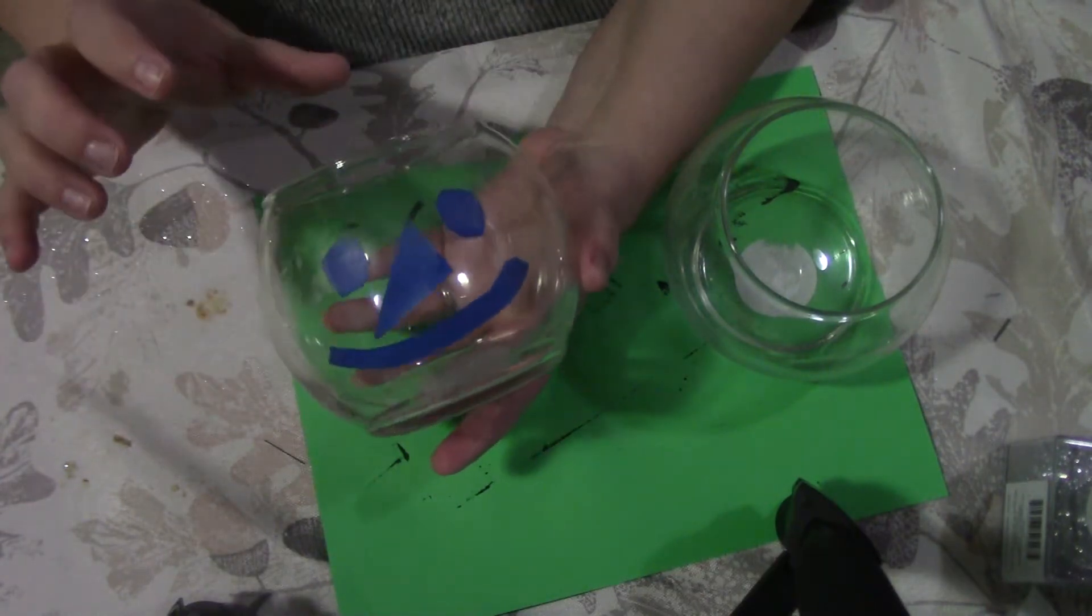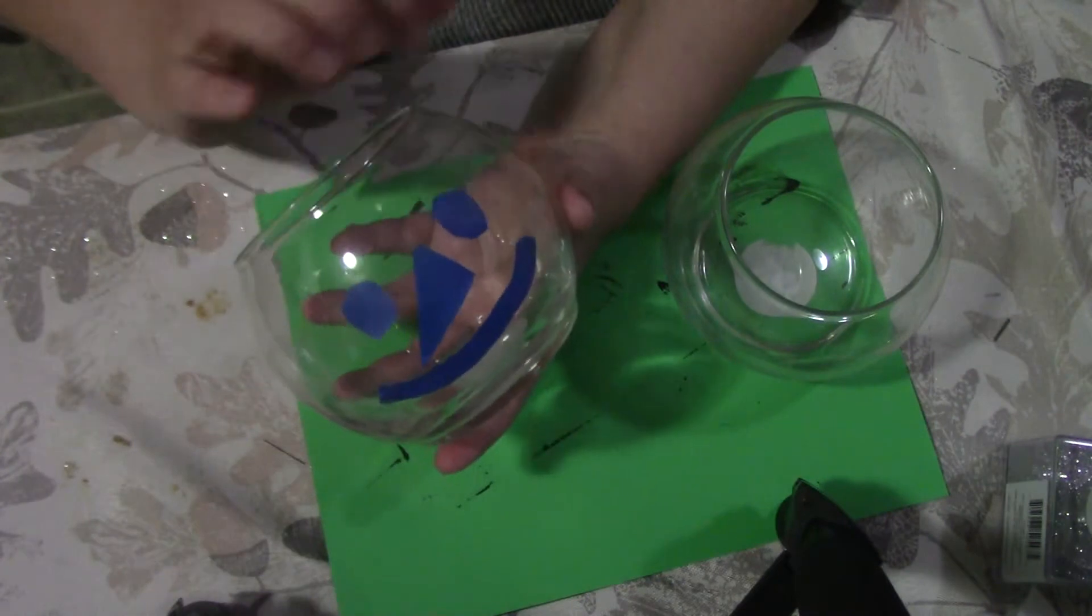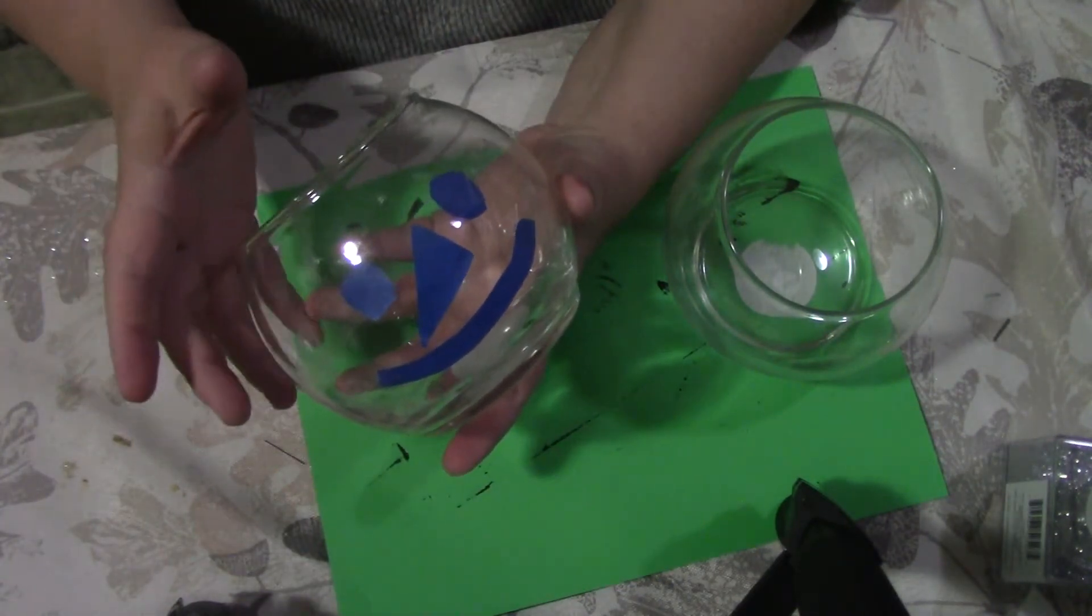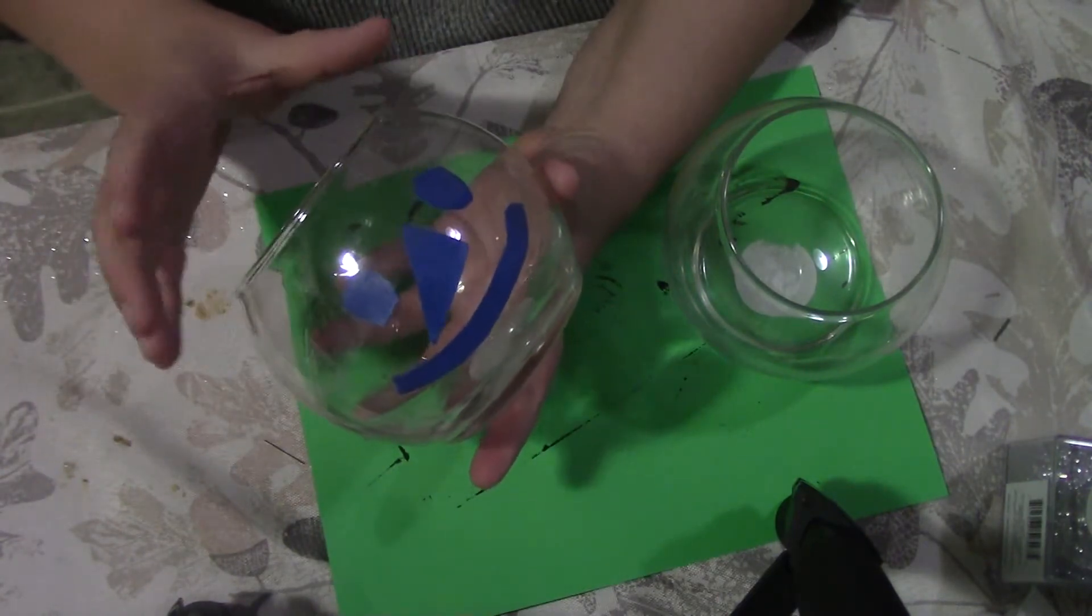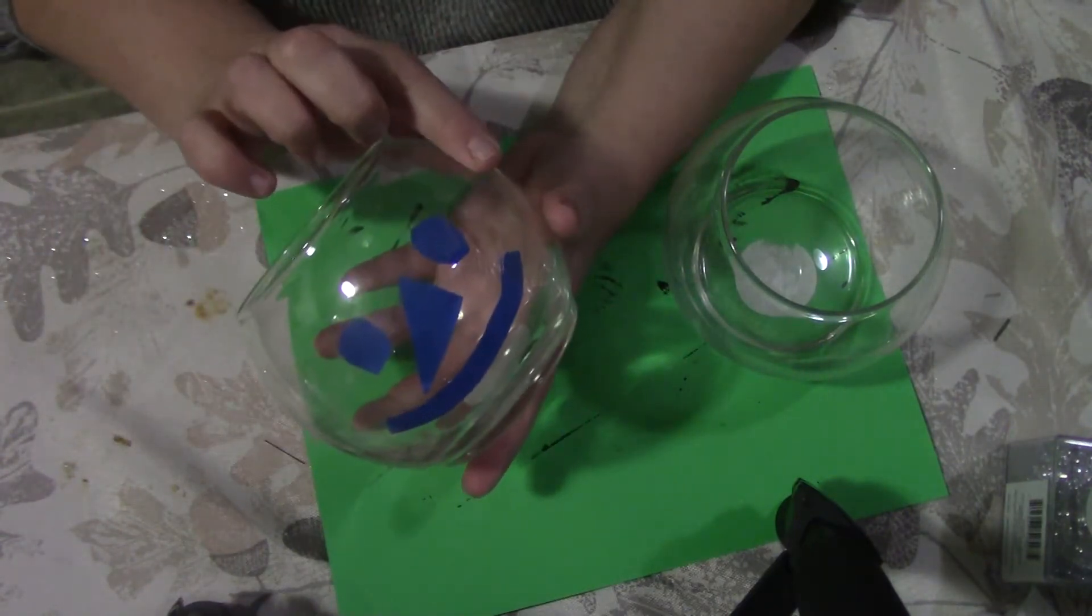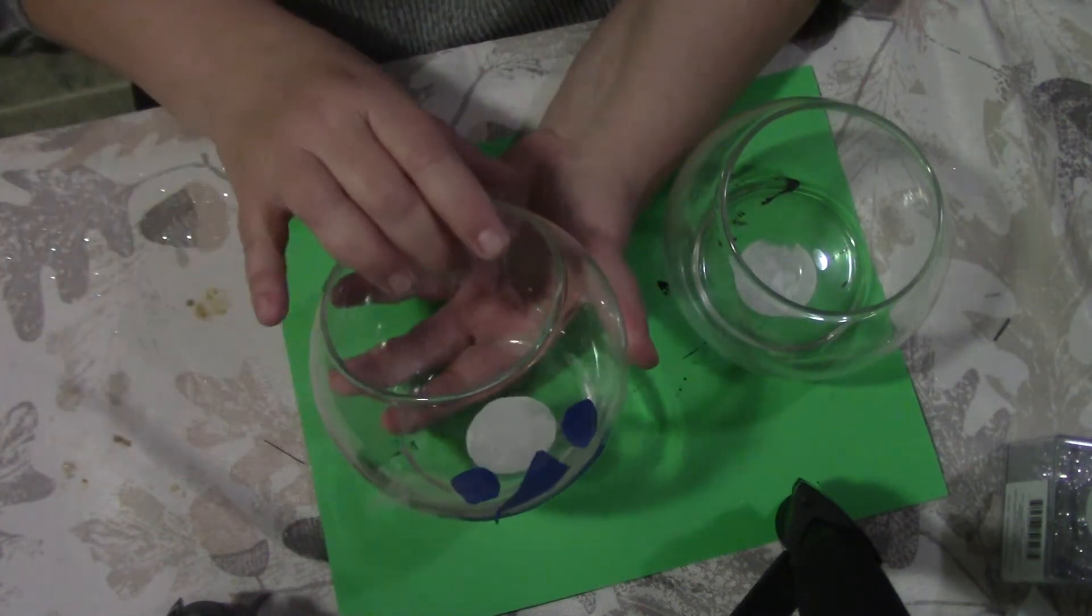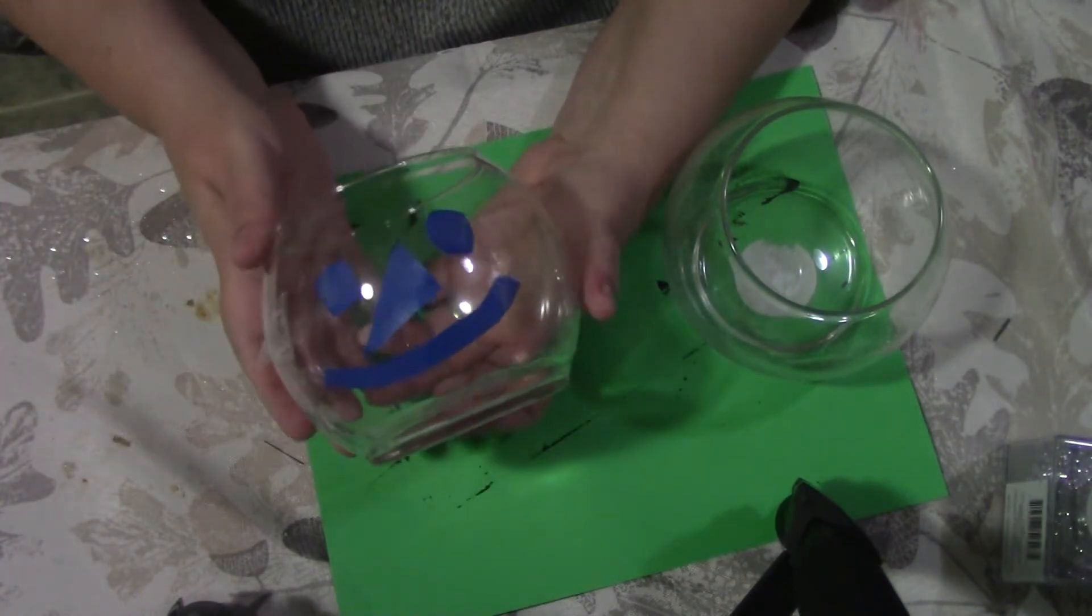And what I've done, because all of my painting is going to be on the inside, that way I have the outer glass creating the gloss on it, the finish on it. Now you could do all of your painting on the outside of the glass, that way if you did want to put lights in it or candy, use it as a candy dish, something like that, you could.